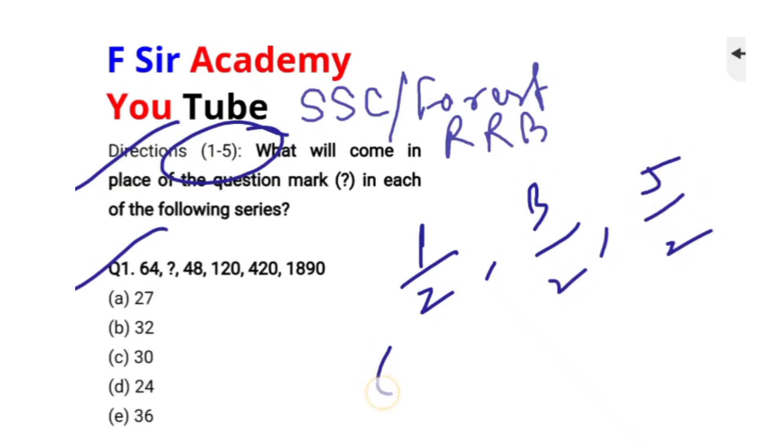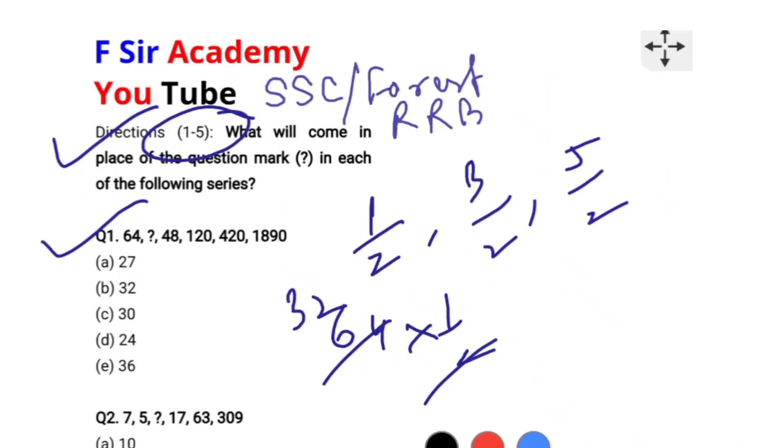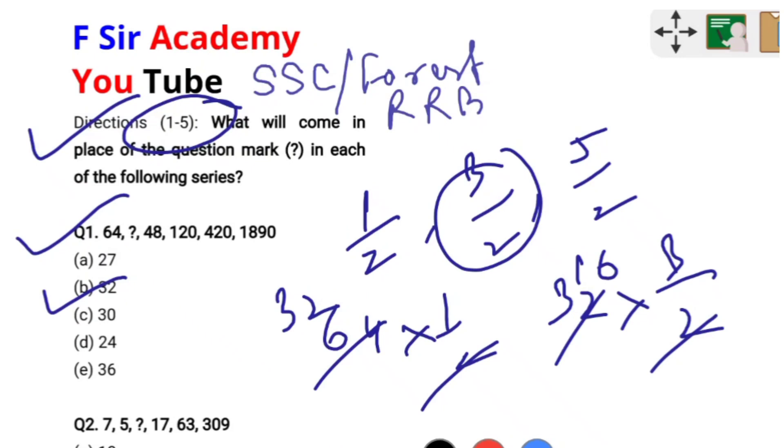First if we multiply 64 into 1/2, we will get the answer 32. We will verify whether 32 is correct or not. Next is 32. 32 we can multiply it by 3/2, 16 into 3 is 48. So 48 is here. So the option B is absolutely correct.